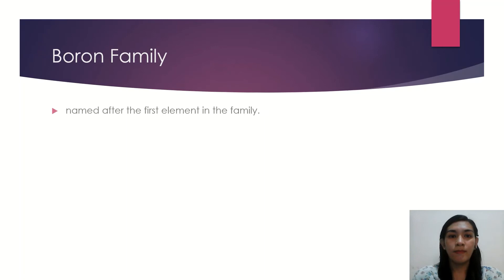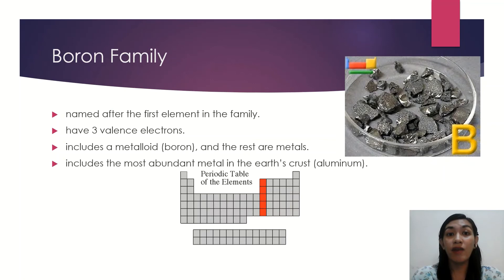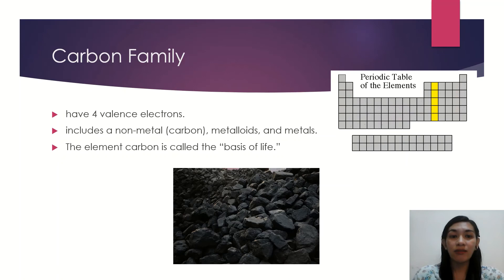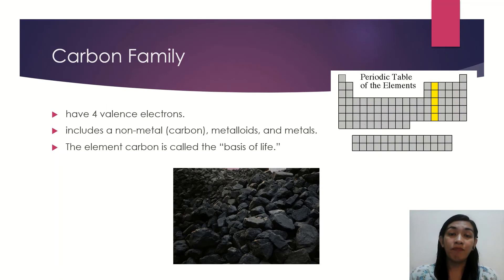Next, we have the boron family, named after the first element in the family. They have three valence electrons and are found in Group 13. The family includes a metalloid, which is boron, and the rest are metals. It also includes the most abundant metal in the Earth's crust, which is aluminum. Next, we have the carbon family, which has four valence electrons. It includes a non-metal — carbon — along with metalloids and metals. Carbon is known as the basis of life and will be discussed further in a chapter on organic compounds.